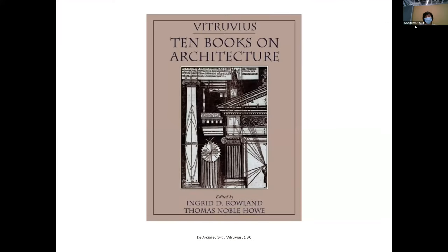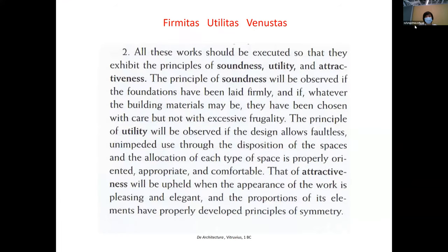He wrote ten books on architecture that survived until now. Note the time: this is one century BC. The first idea he stated is 'firmitas, utilitas, and venustas.' Firmitas means stable — the building can stand up. Utilitas means functional — it serves the function of the building. But venustas, which means beauty or aesthetic attractiveness, is a little bit gray.